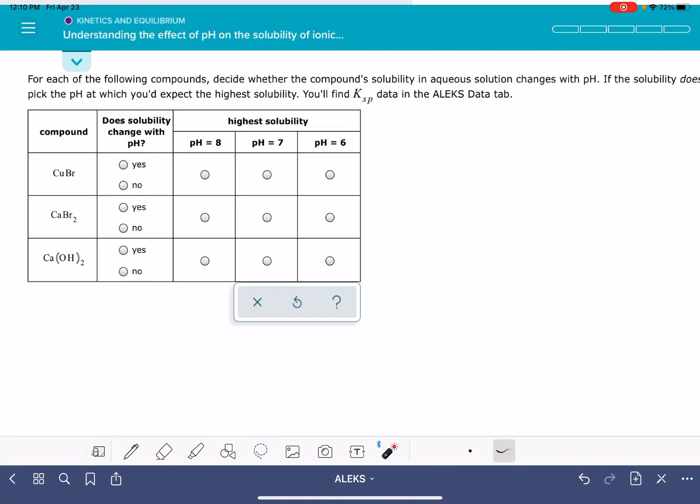In this video, I'll show you how to solve the ALEKS problem understanding the effect of pH on the solubility of ionic compounds. For this problem, you'll be given the formula of three ionic compounds and you'll be asked to predict whether the solubility of the compound changes if the pH of the solution changes.